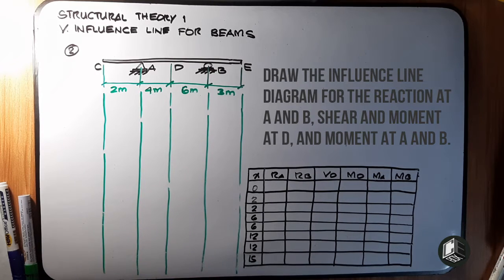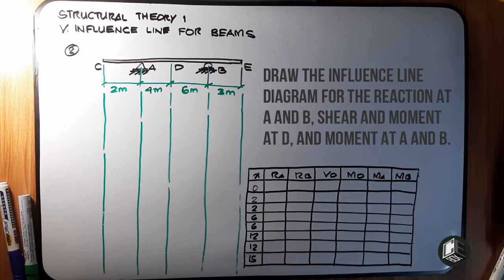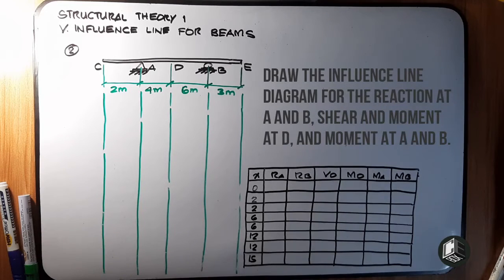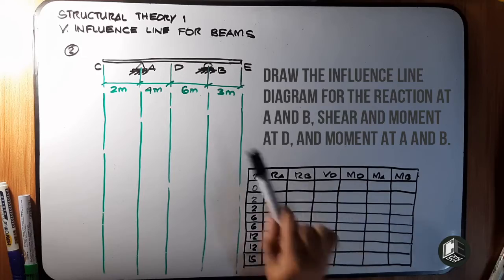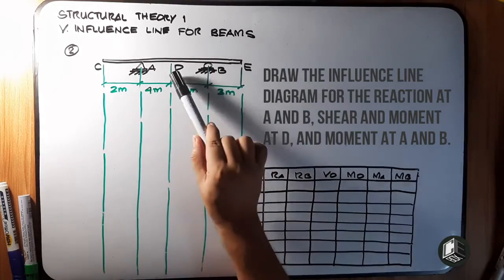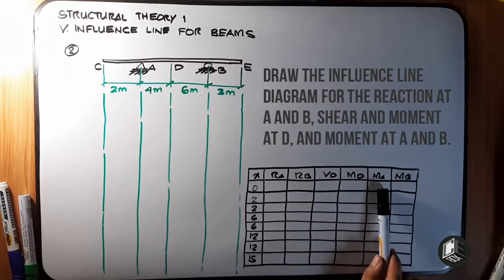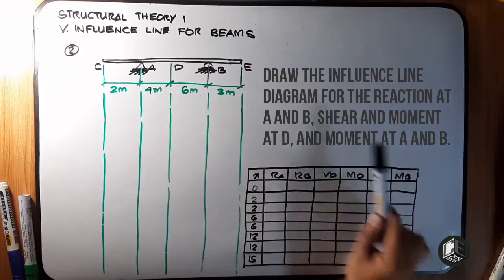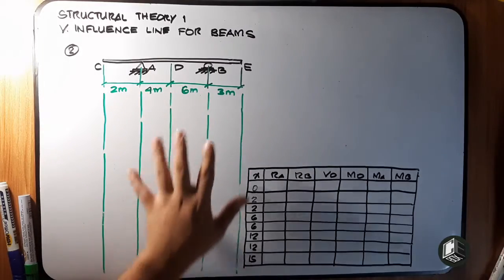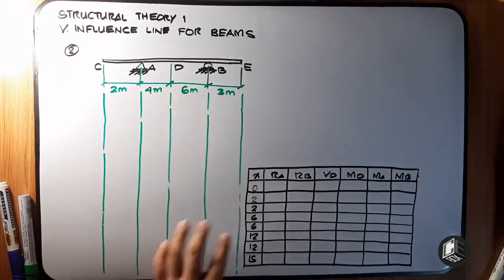This is example number two for influence lines for beams. We will draw the influence line for the reaction at A, reaction at B, shear at D, moment at D, then moment at A and moment at B. Space is pre-prepared for the influence line diagram.